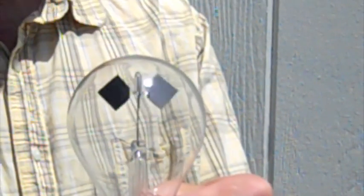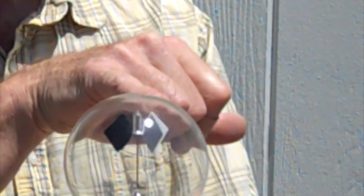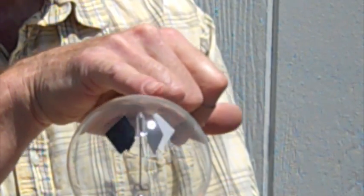Notice there's a black side and a white side to the vane. What's happening is the black side absorbs the sun's energy and heats up more than the white side of the vane.